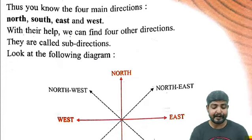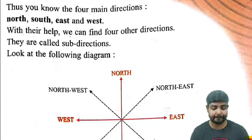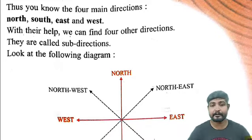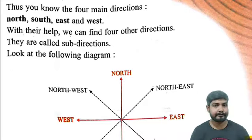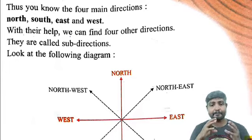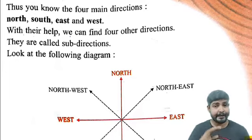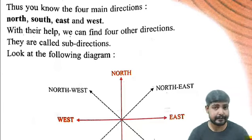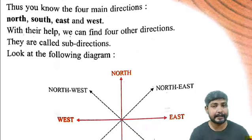With these four directions, we can find four other directions. They are called sub-directions. Mainly there are four cardinal directions — North, South, East, and West — and from these, several more directions can be identified, which are called sub-directions.